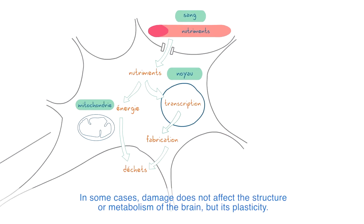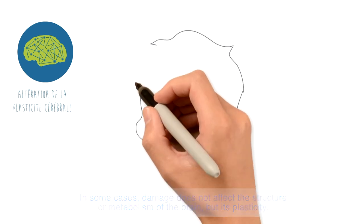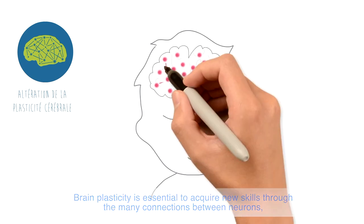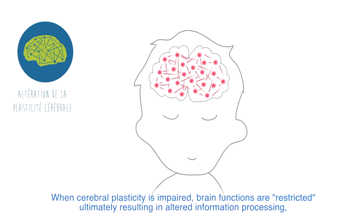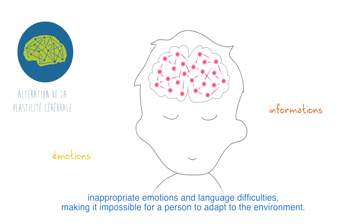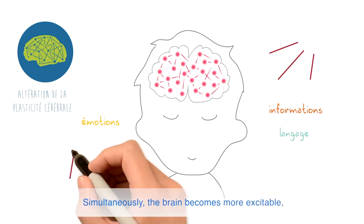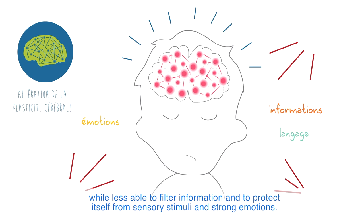In some cases, damage does not affect the structure or metabolism of the brain, but its plasticity. Brain plasticity is essential to acquire new skills through the many connections between neurons, as we experience and are stimulated by the environment. When cerebral plasticity is impaired, brain functions are restricted, ultimately resulting in altered information processing, inappropriate emotions and language difficulties, making it impossible for a person to adapt to the environment. Simultaneously, the brain becomes more excitable, while less able to filter information and to protect itself from sensory stimuli and strong emotions.